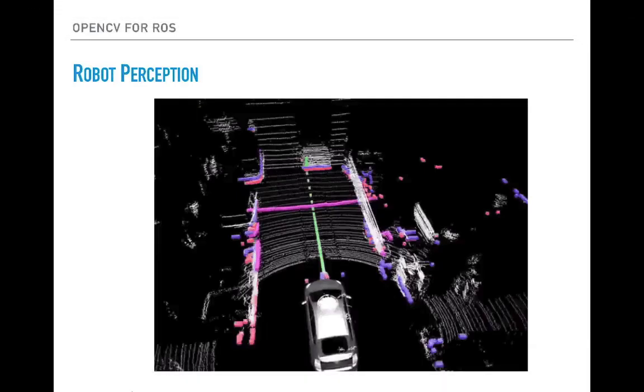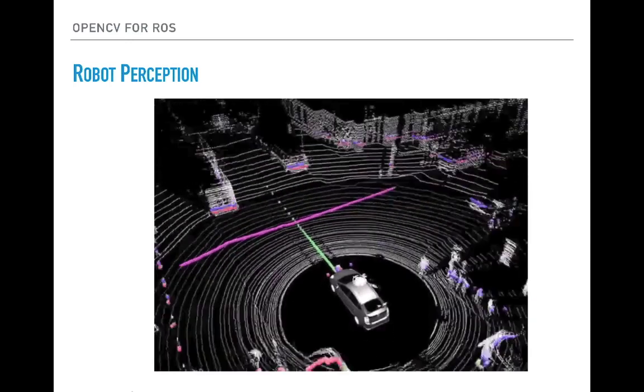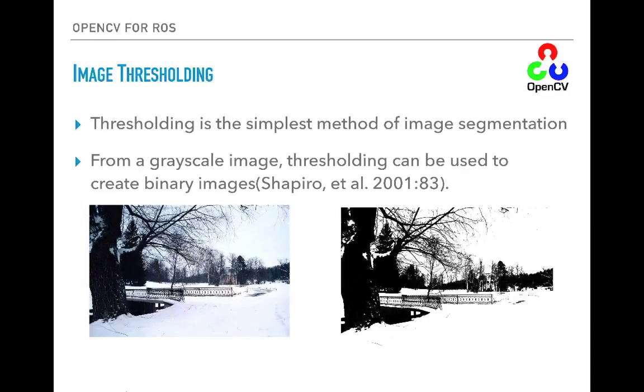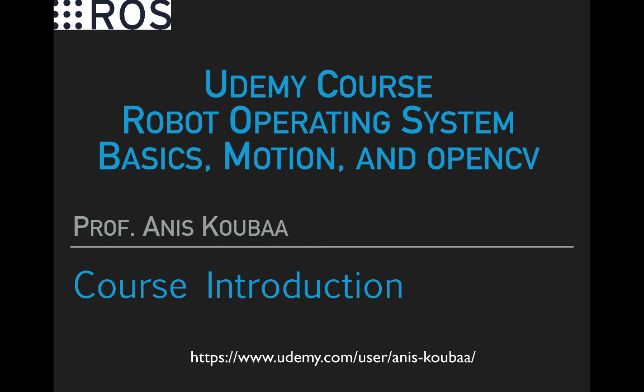The third part of the course deals with robot perception and presents an overview of OpenCV, which is the most powerful library to develop computer vision and image processing algorithms. We demonstrate several OpenCV programs on ROS and show how to bridge between ROS image format and OpenCV image format. The course also provides many hands-on activities so that students can assess their understanding of the concepts presented in the lectures. This course provides a comprehensive overview of ROS and allows a new user to quickly find their path into developing their own project with ROS.